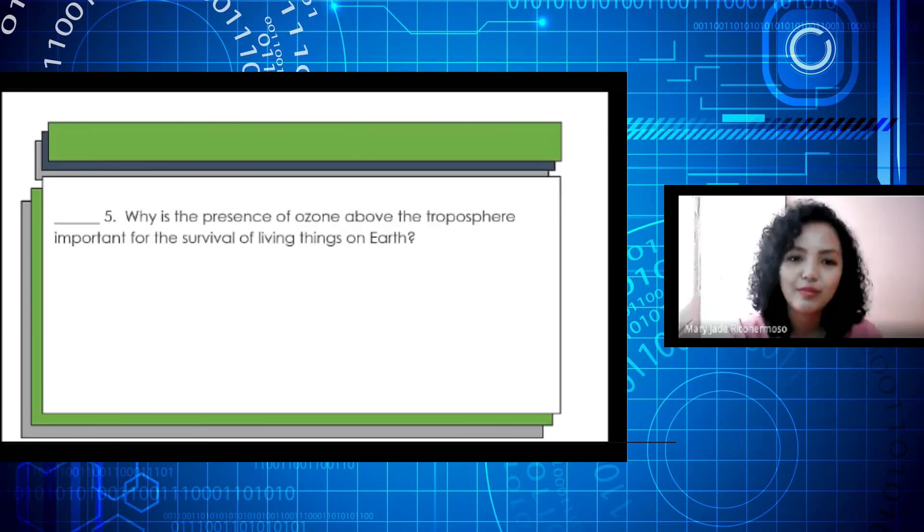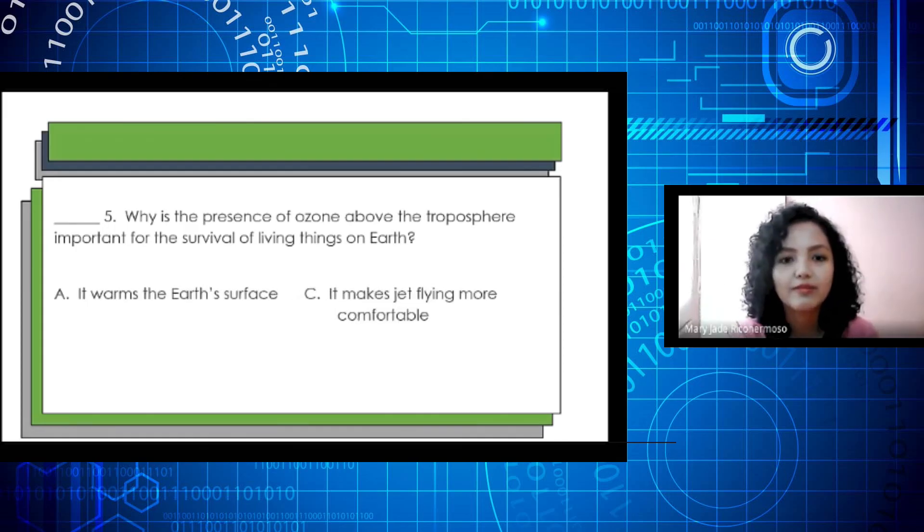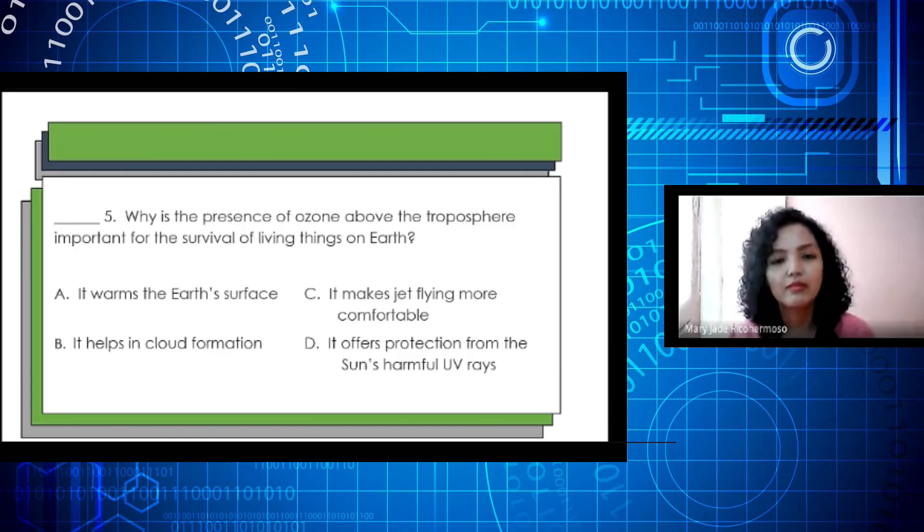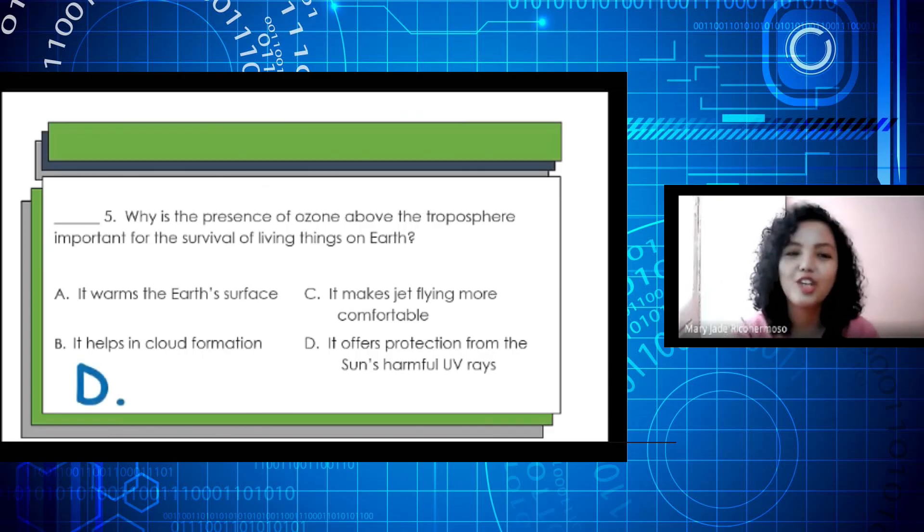Last number, number 5. Why is the presence of ozone above the troposphere important for the survival of living things on Earth? A. It warms the Earth's surface. B. It helps in cloud formation. C. It makes jet flying more comfortable. And letter D. It offers protection from the sun's harmful UV rays. The correct answer is letter D. Good job!